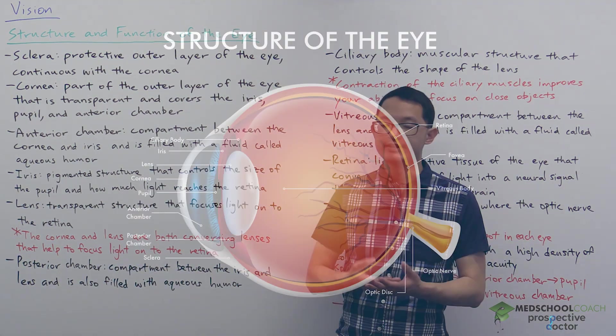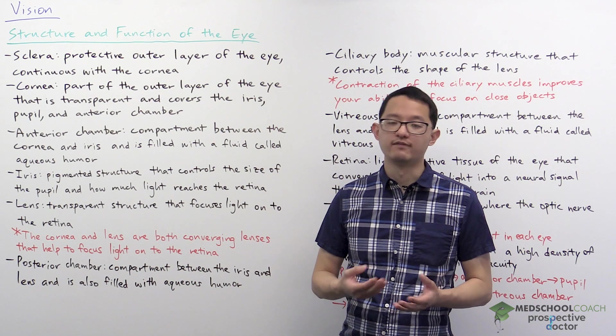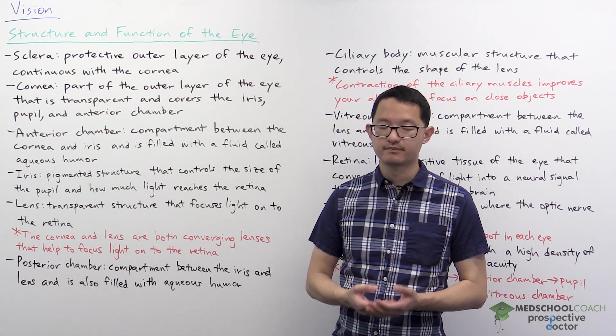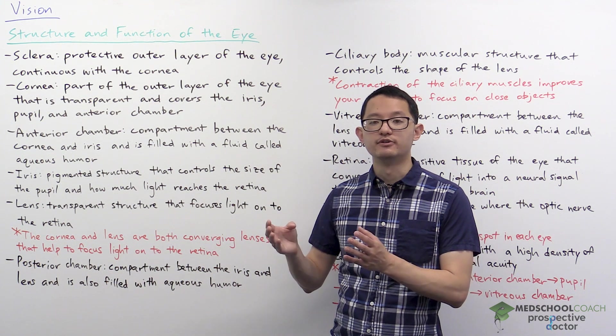As you can see in the diagram, the anterior chamber is a compartment between the cornea and the iris, and it's filled with a fluid called aqueous humor. From the anterior chamber, the light is going to continue through the pupil.